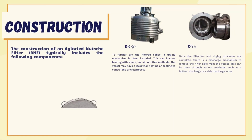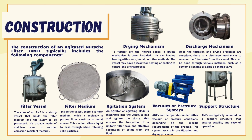An Agitated Nutsche Filter, also known as a Nutsche Filter Dryer, is a type of filtration and drying equipment commonly used in chemical, pharmaceutical, and other process industries. It is designed for separation of solids from liquid in a slurry or suspension and subsequent drying of the filtered solids. An ANF is typically constructed with several key components, the first being the filter vessel — a robust vessel designed to hold the filter medium and slurry to be processed, usually made of stainless steel or other corrosion-resistant material.